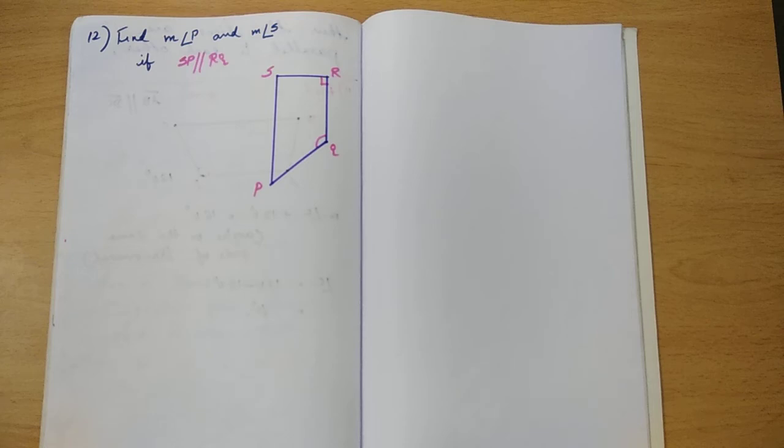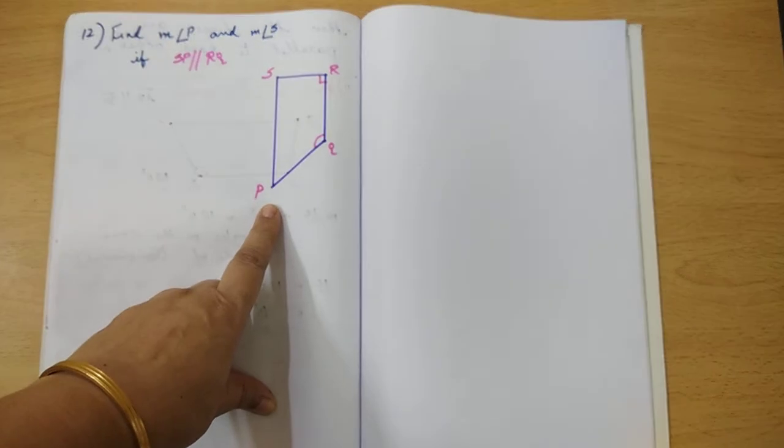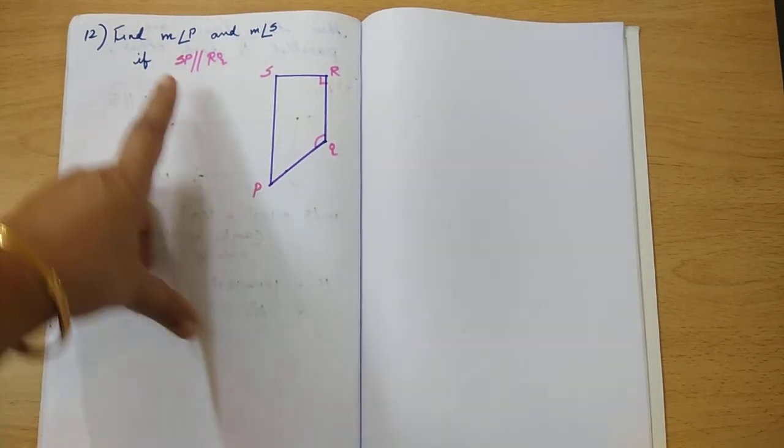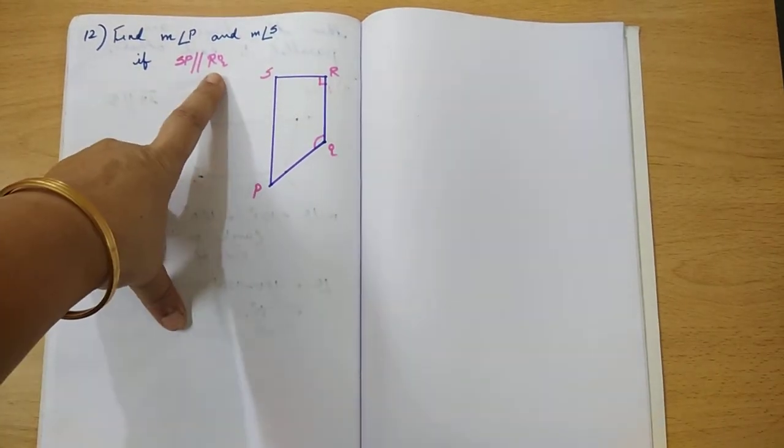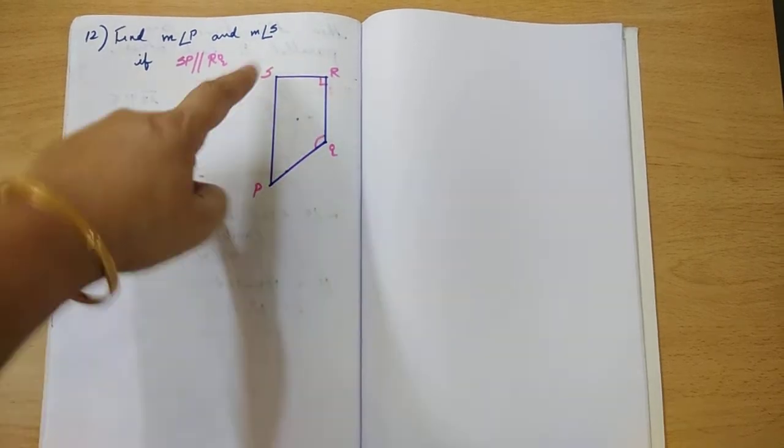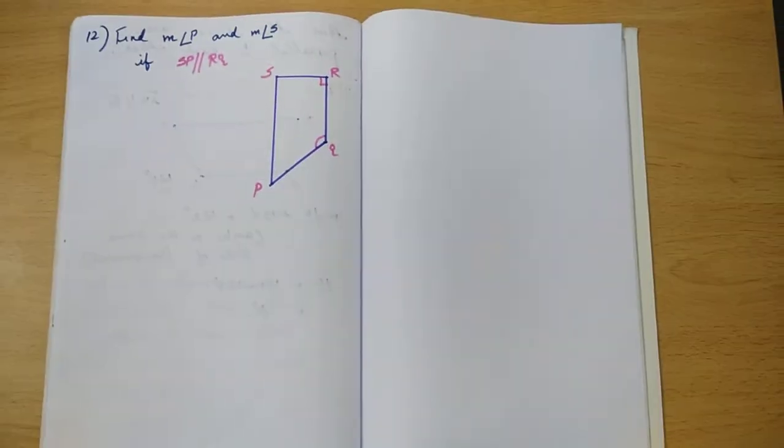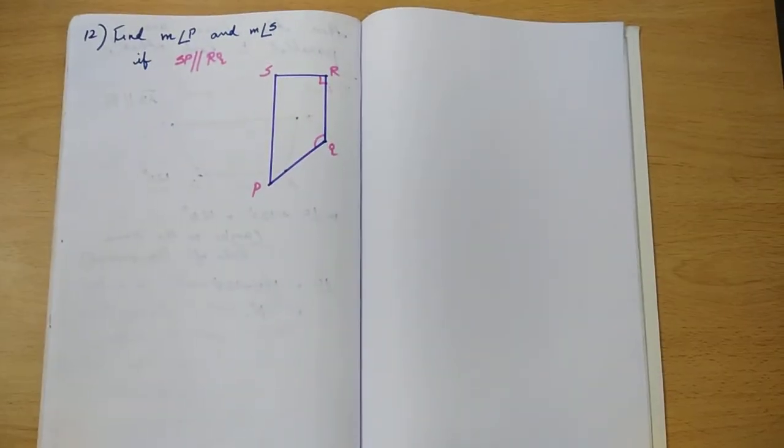So your twelfth question of exercise 3.3. You are once again given a quadrilateral. Since SP is given to be parallel to RQ, this is a trapezium. One pair of sides are parallel, so it's a trapezium.